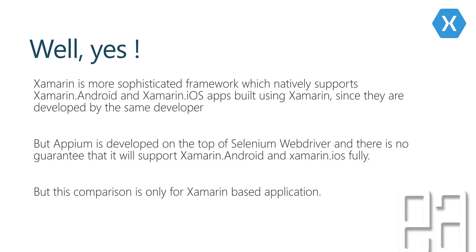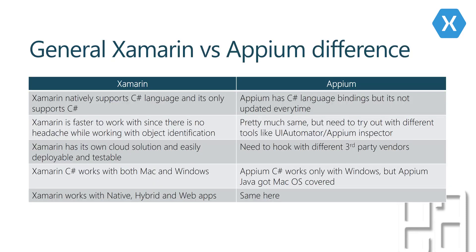This comparison is only relevant for Xamarin-based applications. For other applications developed with other technologies — native or hybrid — this discussion may not apply. Let's talk about some general differences between Appium and Xamarin. Xamarin natively supports C-sharp and only supports C-sharp. Appium has a C-sharp language binding but it's not always updated; Appium also has other language bindings like Java, Perl, and Ruby.